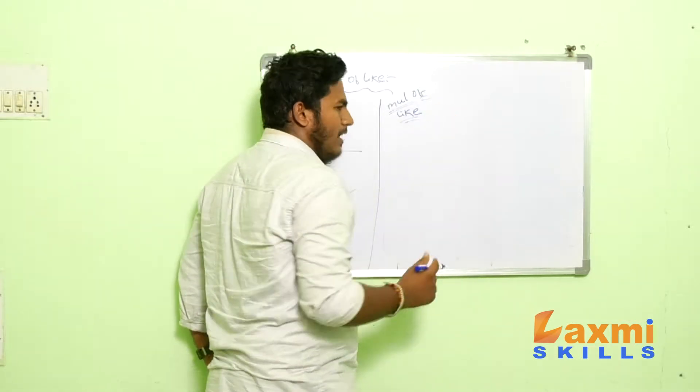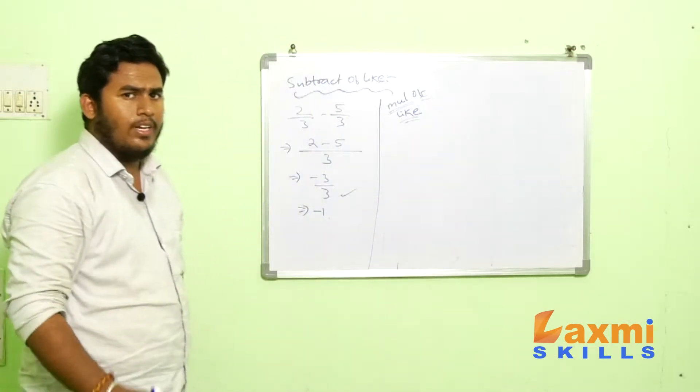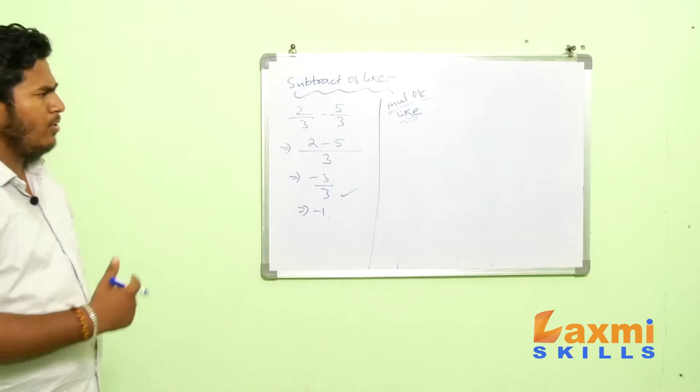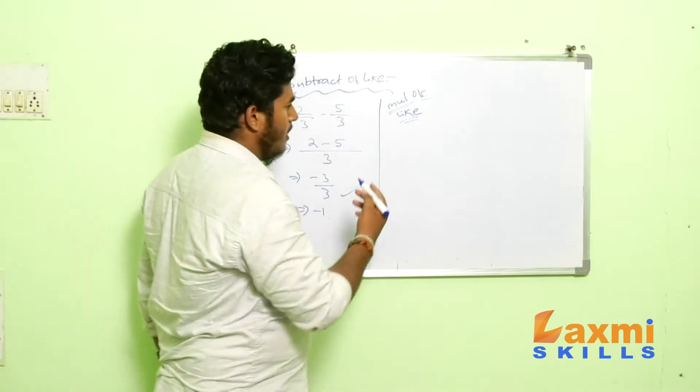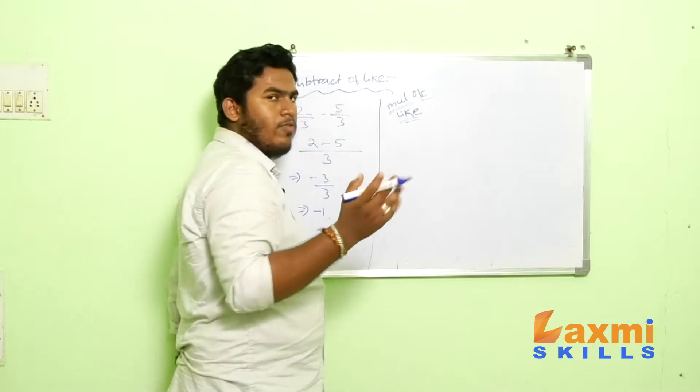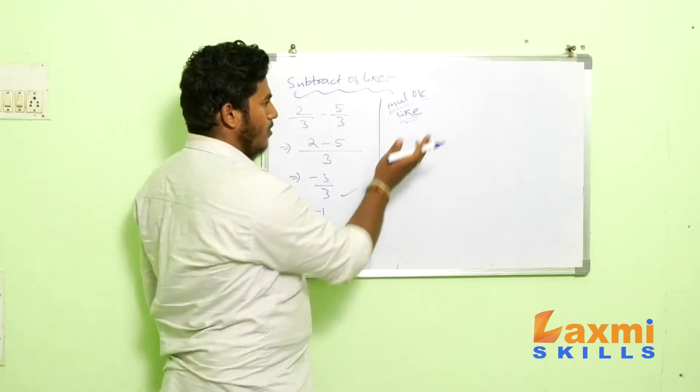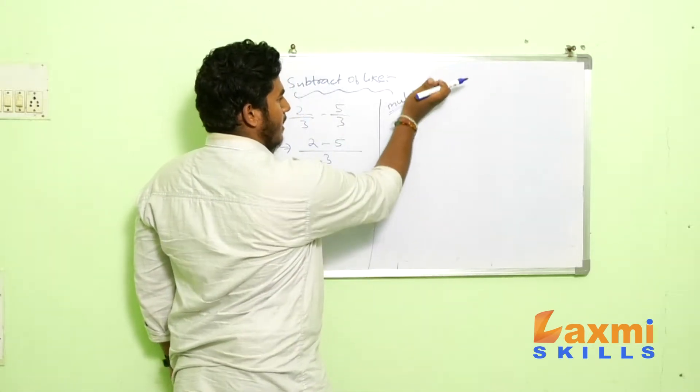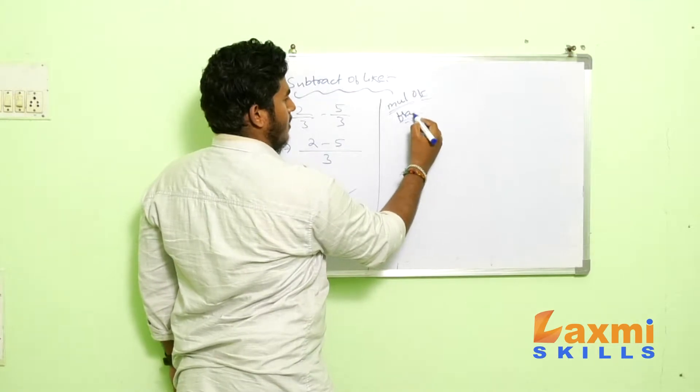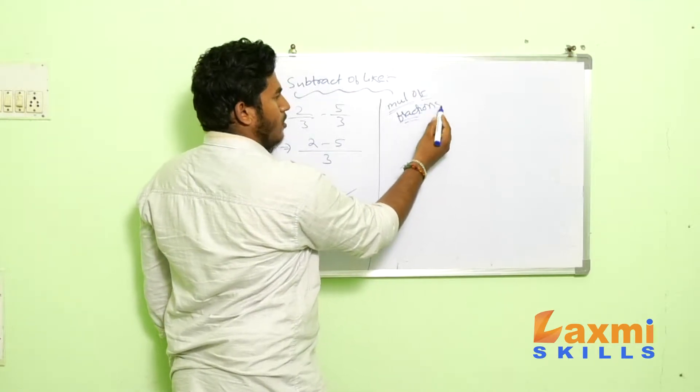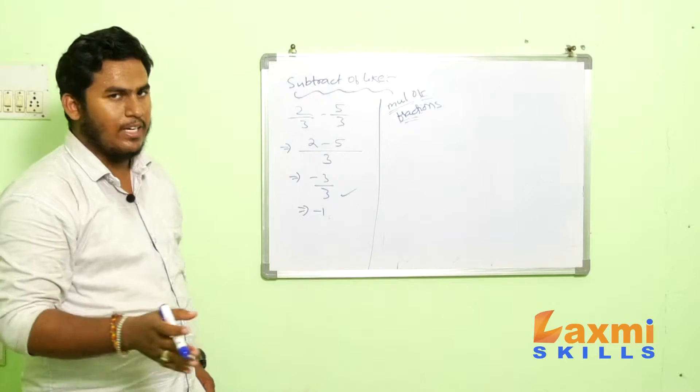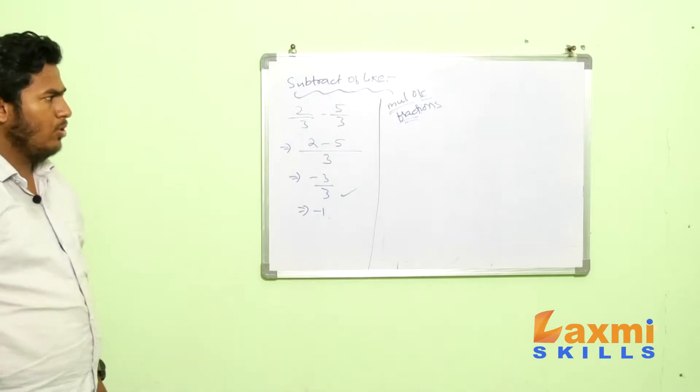So, multiplication of like terms and unlike terms are same. Okay, it is almost similar. So, you need not to worry about the like or unlike. But you go for the multiplication. So, I am not considering only for like. I am considering multiplication of fractions here. So, there is no much differences between like term multiplication and like term fractions.